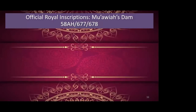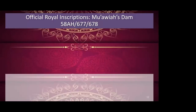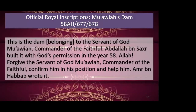Muawiyah's dam inscription, 58 AH or 678 AD: 'This is the dam belonging to the servant of God, Muawiyah, commander of the faithful. Abdullah Nusakh built it with God's permission in the year 58. Allah forgive the servant of God, Muawiyah, commander of the faithful — confirm him in his position and help him. Umar ibn Habbab wrote it.' What's missing? No Muhammad. There is no Muhammad, no reference to Muslims, no reference to Islam. All we have is servant of God and commander of the faithful.